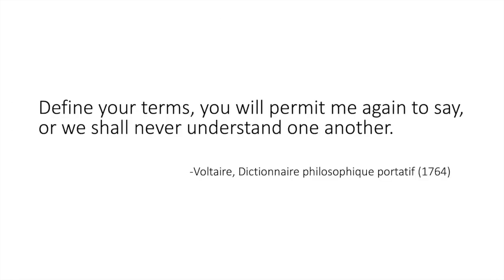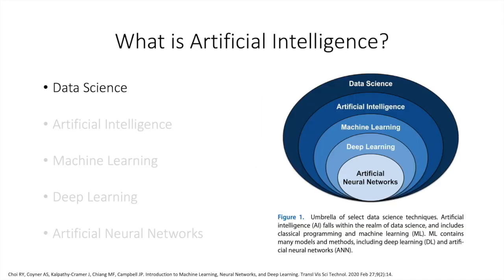One way to start talking about AI is to look at the different terminology. I like this quote from Voltaire: 'Define your terms or we shall never understand one another.' Data science is an interdisciplinary field that uses scientific methods, processes, algorithms, and systems to extract knowledge and insights from many structural and unstructured data. You can think of this as information you can put on a slide after analyzing data.